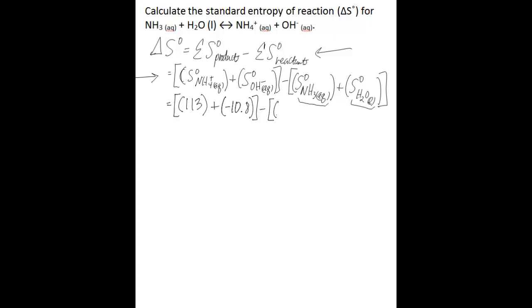For ammonia in aqueous form, you'd find a value of 111. And then for water as a liquid, the value for standard molar entropy would be 69.9. So you do the math there, and all of these values are in joules per kelvin.